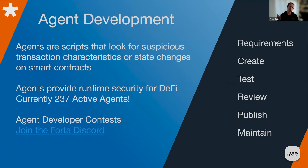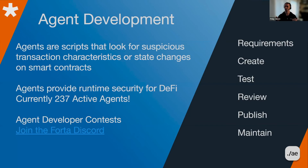I've got the entire process that we go through — this is probably a 50,000-foot view of the steps we go through when we develop agents. We start with the requirements: what is this agent supposed to do, what are we looking for, what is the protocol, how does it work? Then we create — this is actually doing the software development, and this is where the bulk of this talk is going to occur.